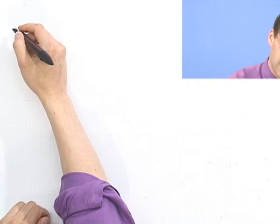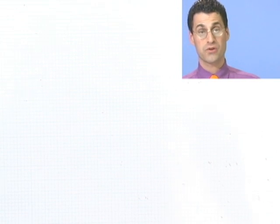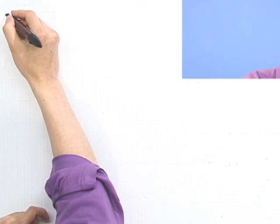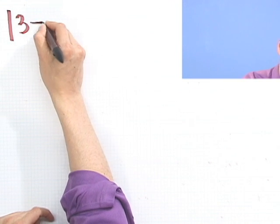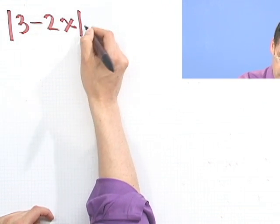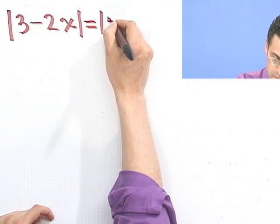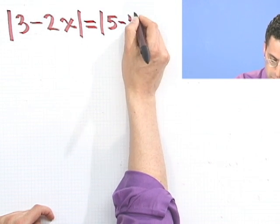Okay, so let's try a couple more examples of equations with absolute values. What I want to do is give you a chance to see what you do if you have an equation with two absolute values in it. For example, suppose we have absolute value of 3 minus 2x equals absolute value of 5 minus 4x.